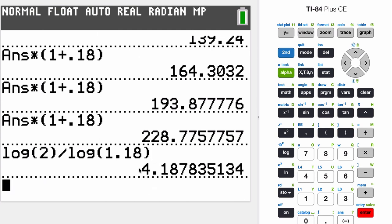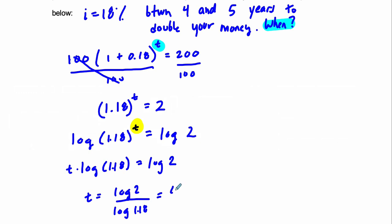And you can see it's a little bit over 4 years. It's 4.19 years approximately. And that gives you a much more exact result, 4.19 years, to double your money.